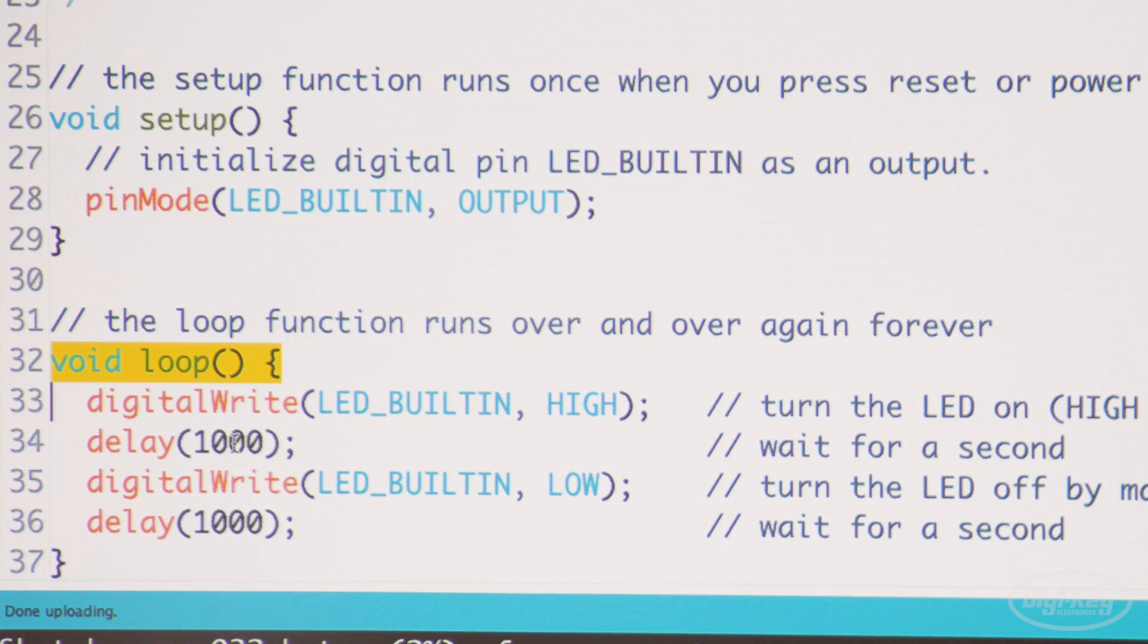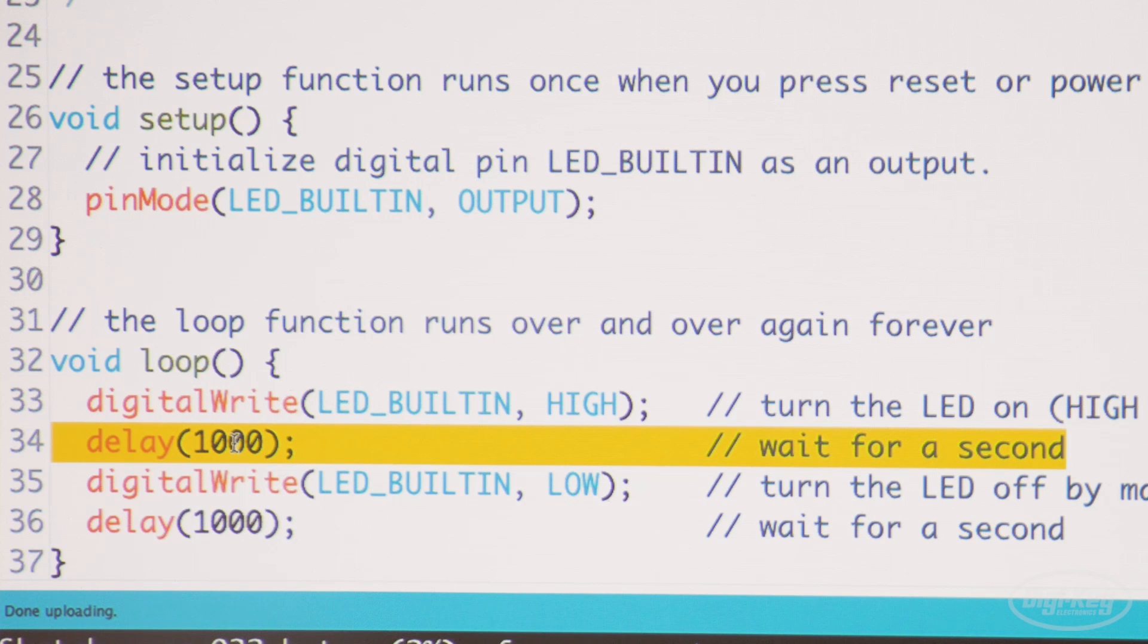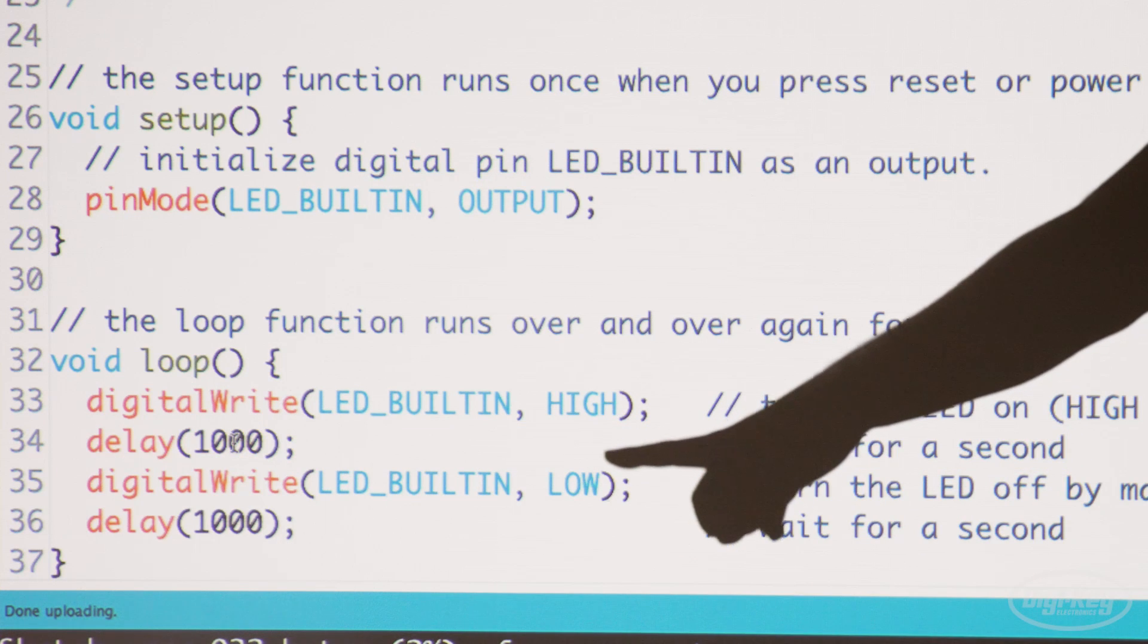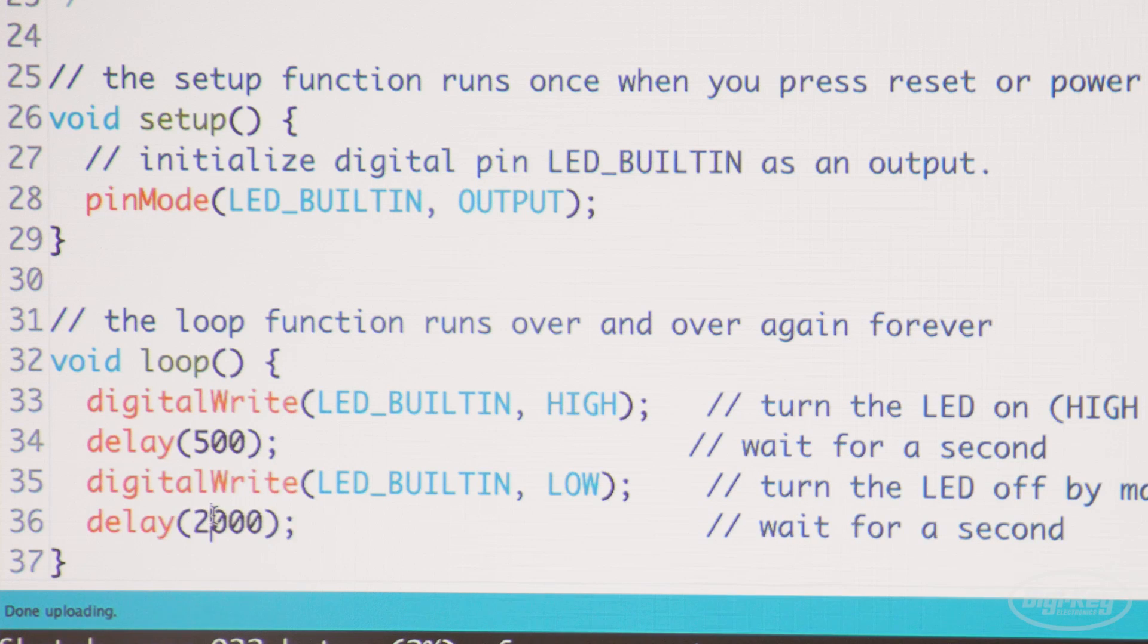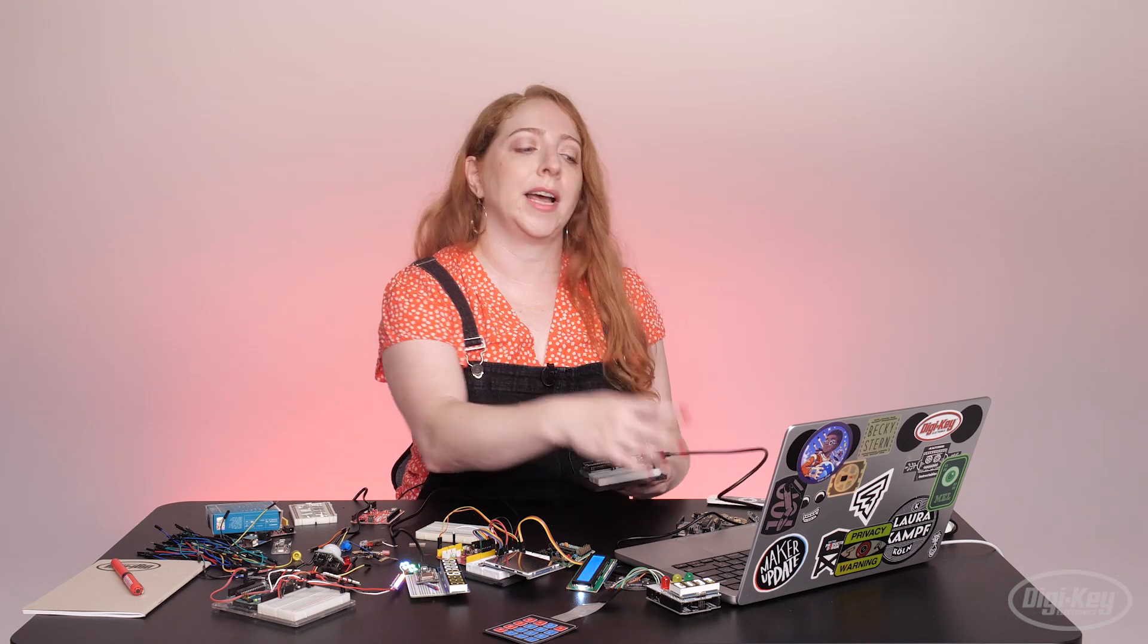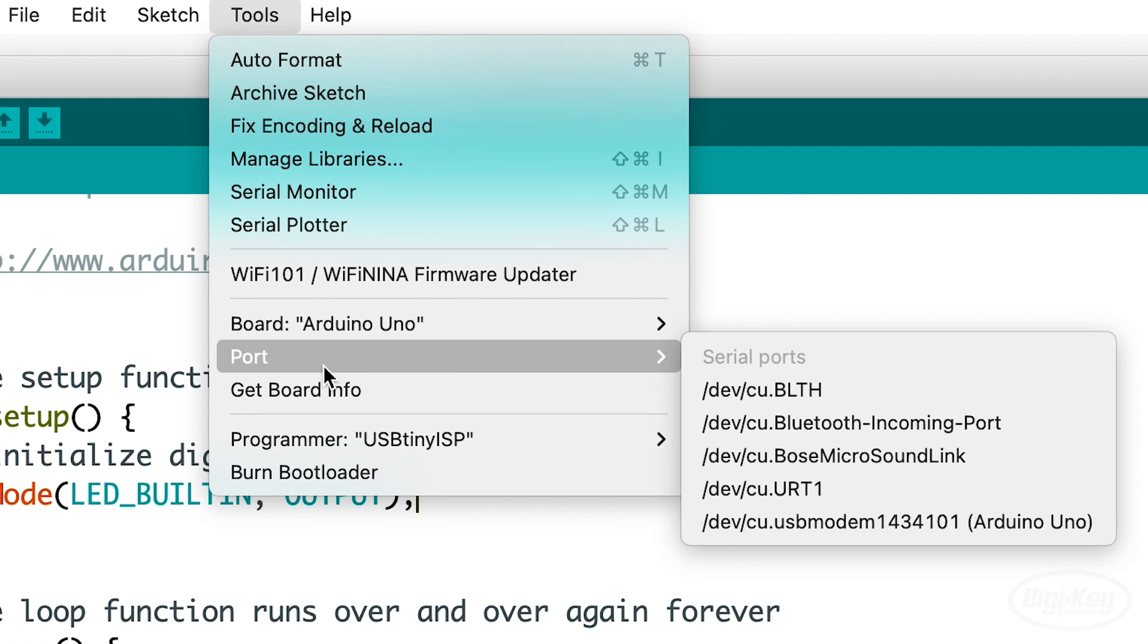Let's try switching up that interval. To customize this code, you can just change the delay values, something like 500 milliseconds and 2,000 milliseconds, and then upload the program to the board.